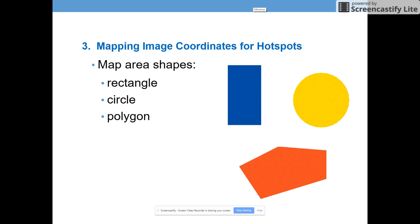So there are three main shapes that we'll be able to use when creating our image map. The first is a rectangle. So you can see here in blue, that's an example of a rectangle. That's a four-sided image where you have two sets of parallel lines and 90-degree angles.